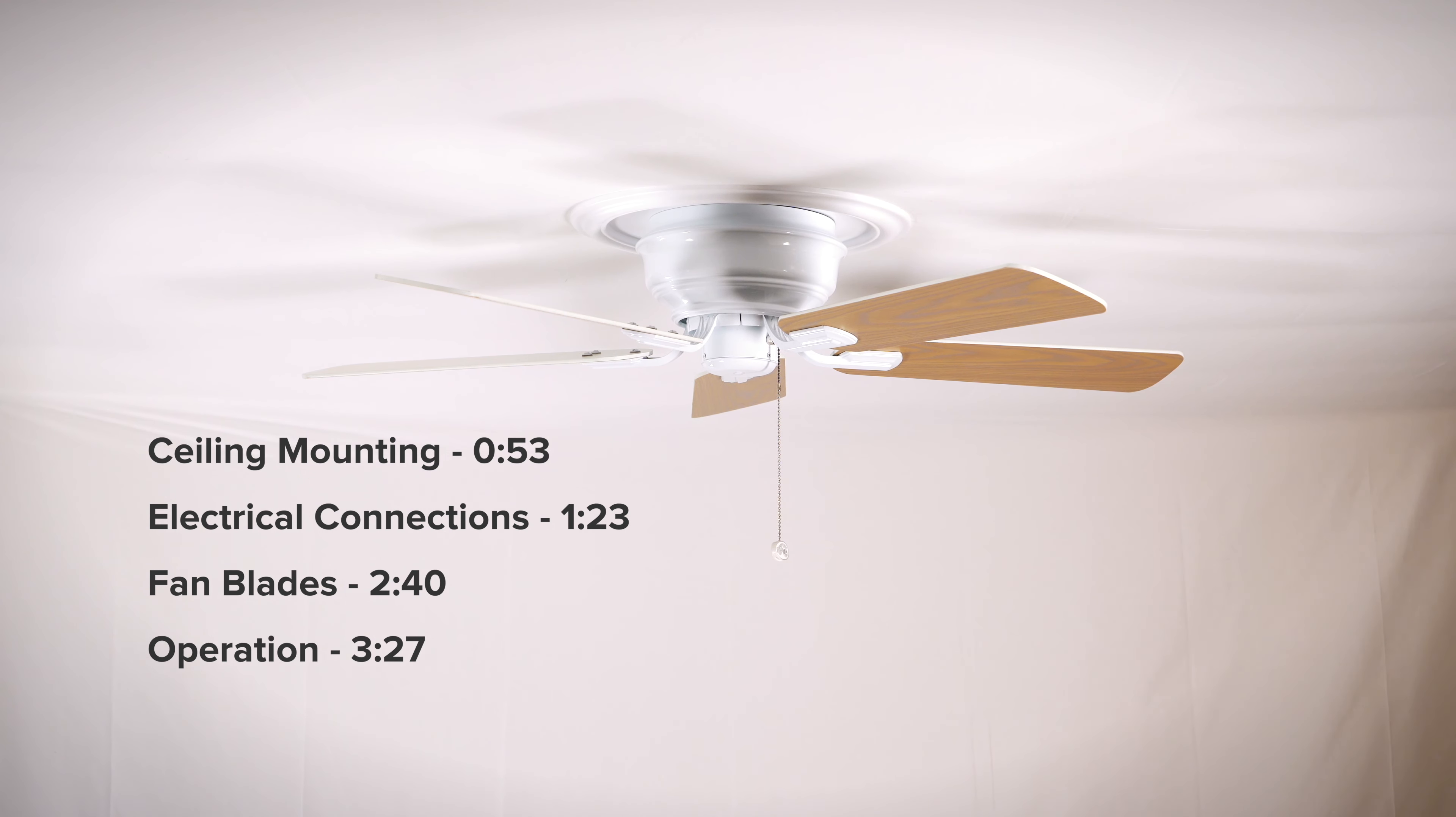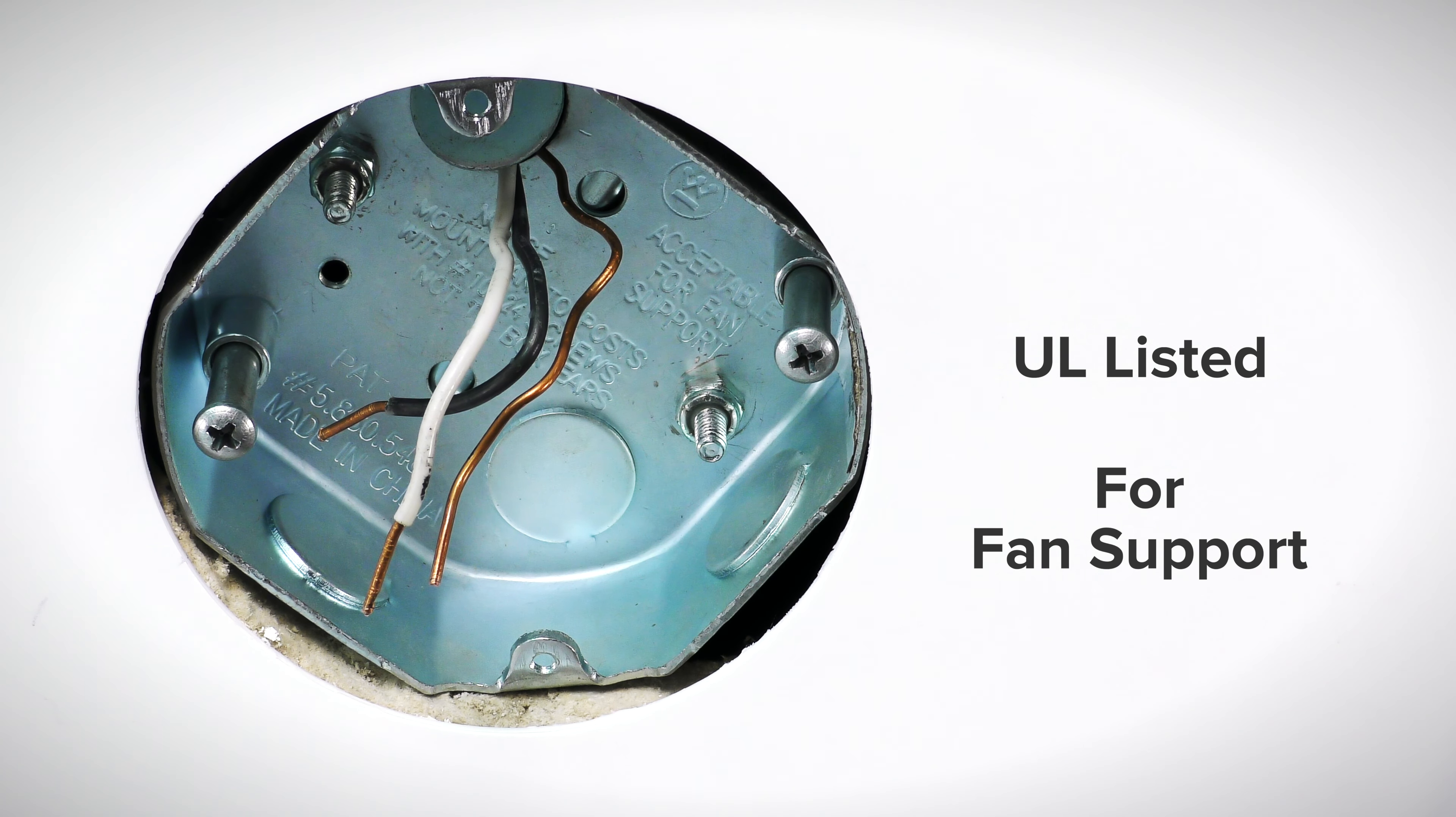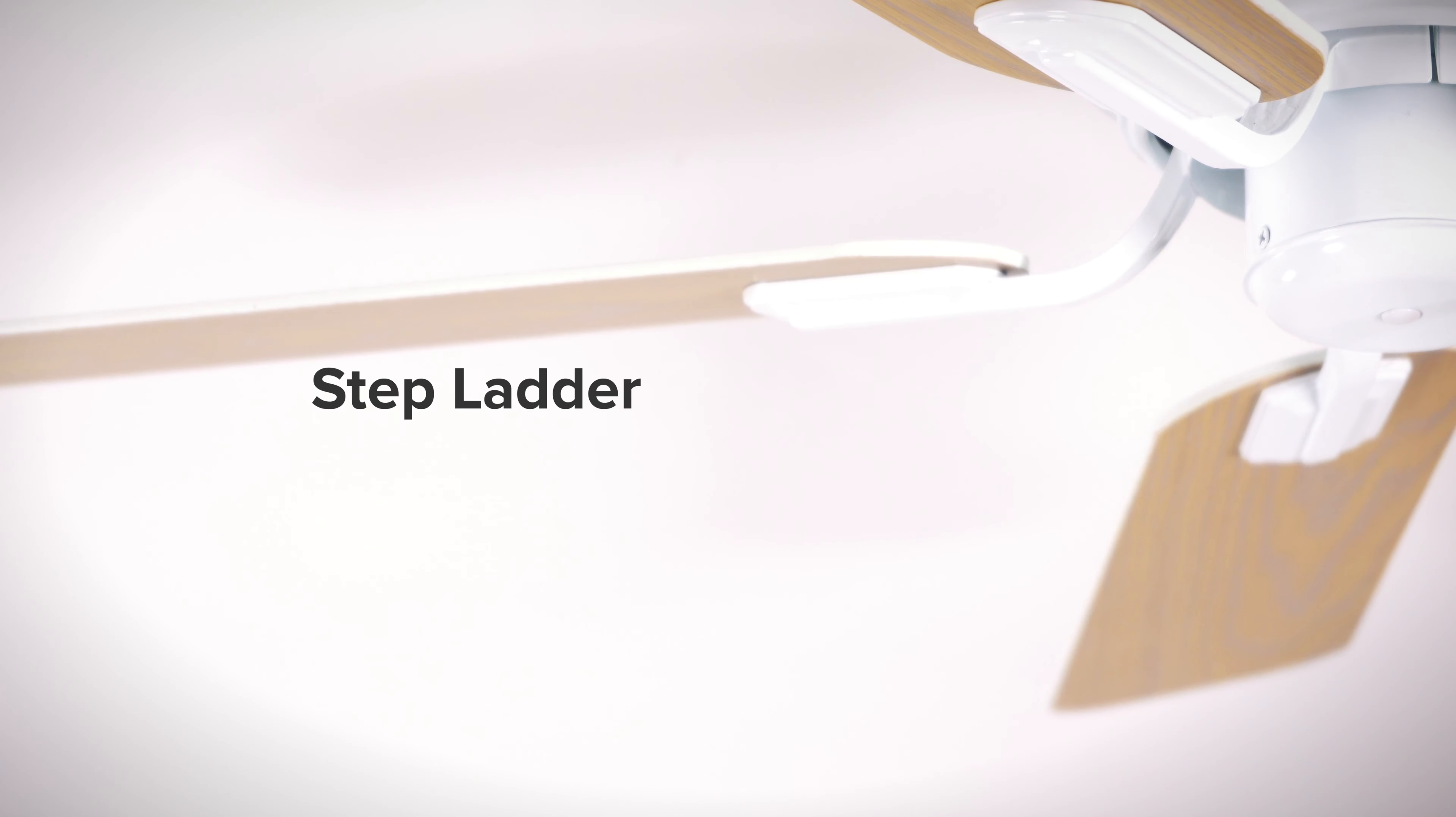To install the fan, you will need a UL listed outlet box that is for fan support of up to 35 pounds. You will also need a stepladder, screwdriver, wire stripper, and electrical tape.